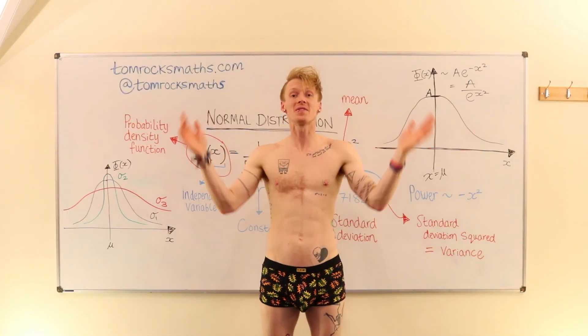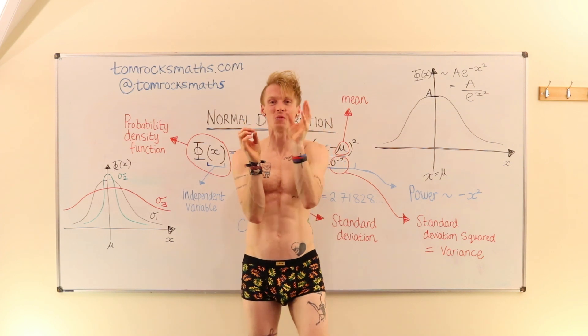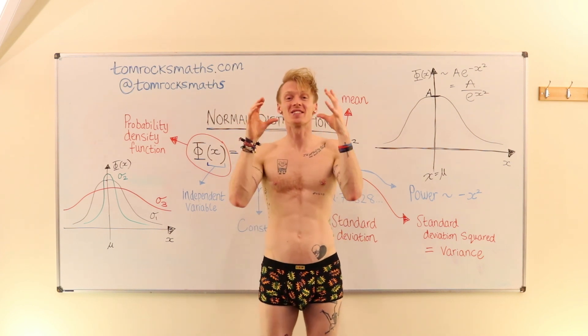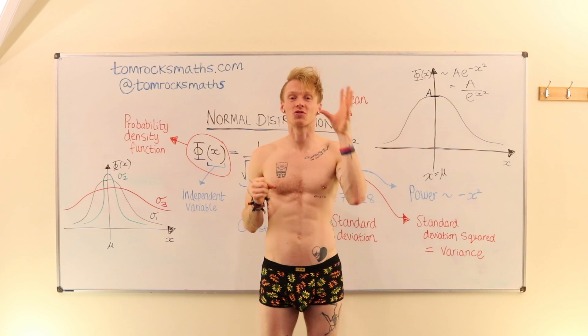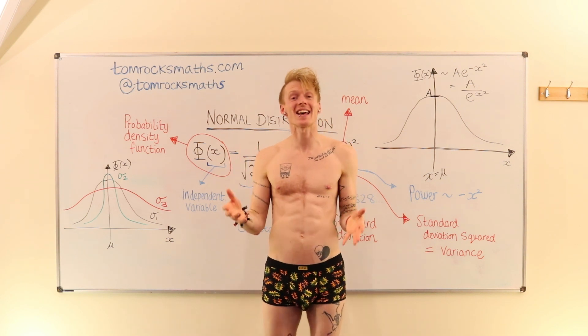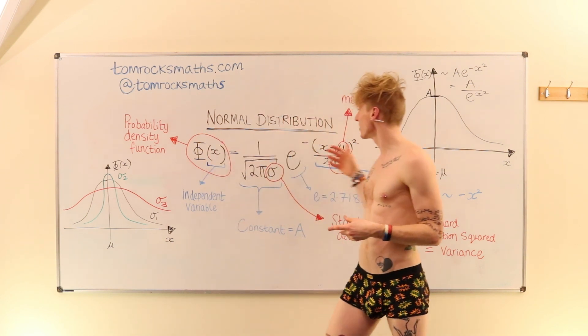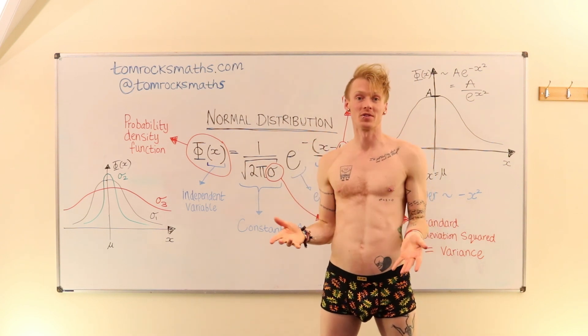So there you have it. From defining your average person with one breast and one testicle to deciding whether or not a drug in a clinical trial is a success or not. The normal distribution is incredibly important.